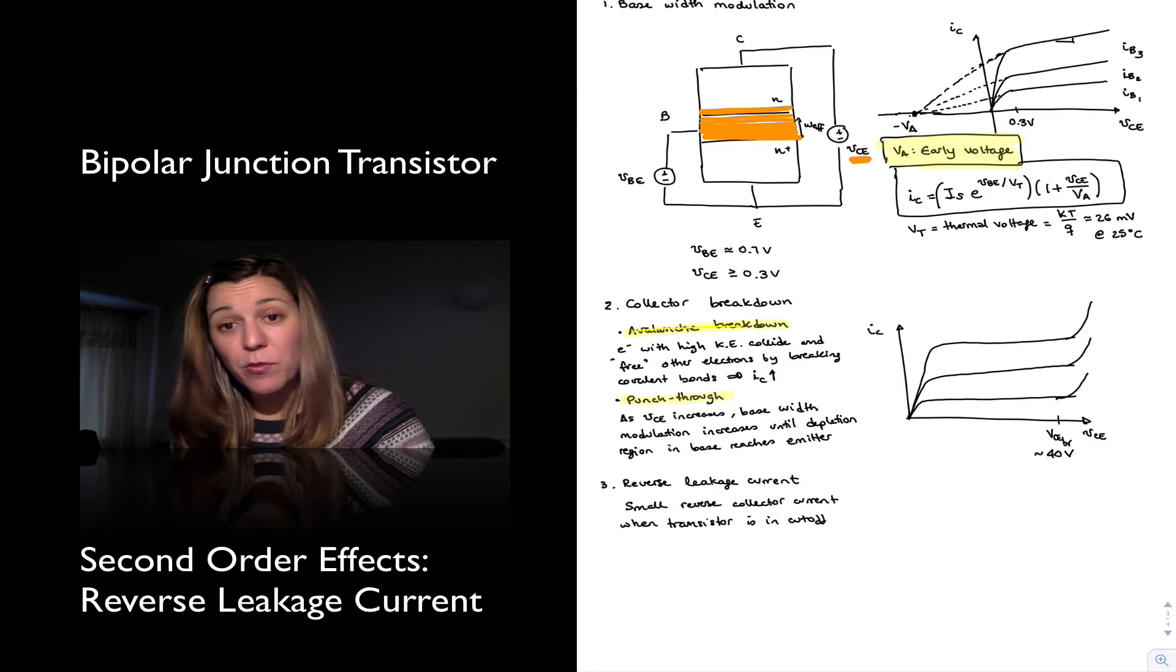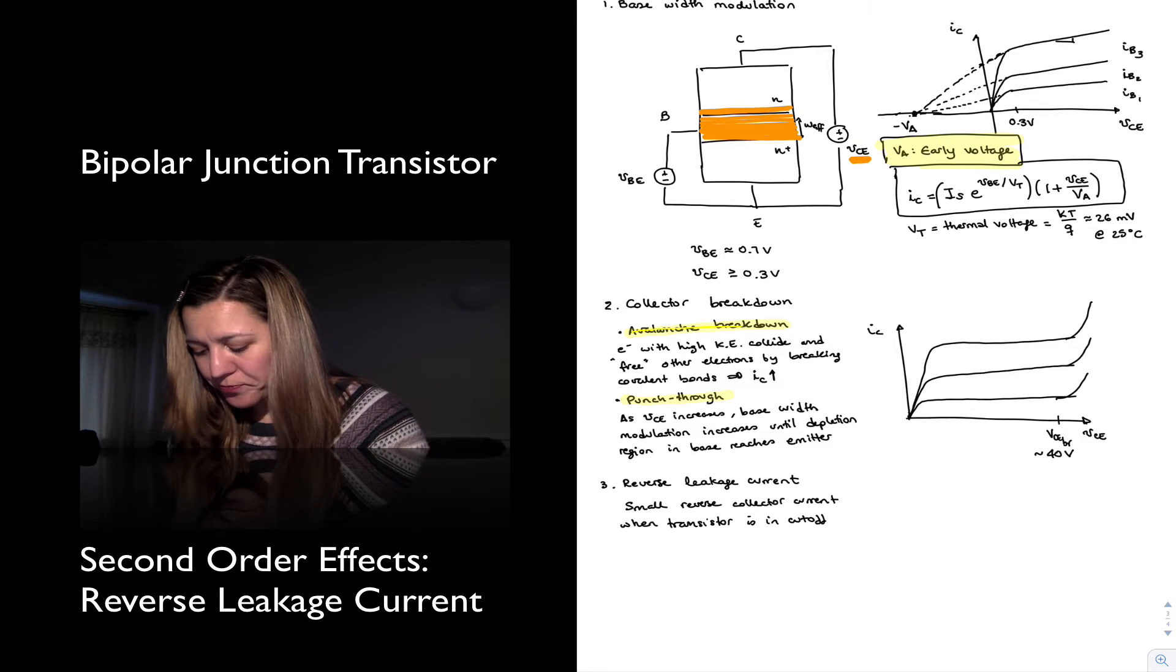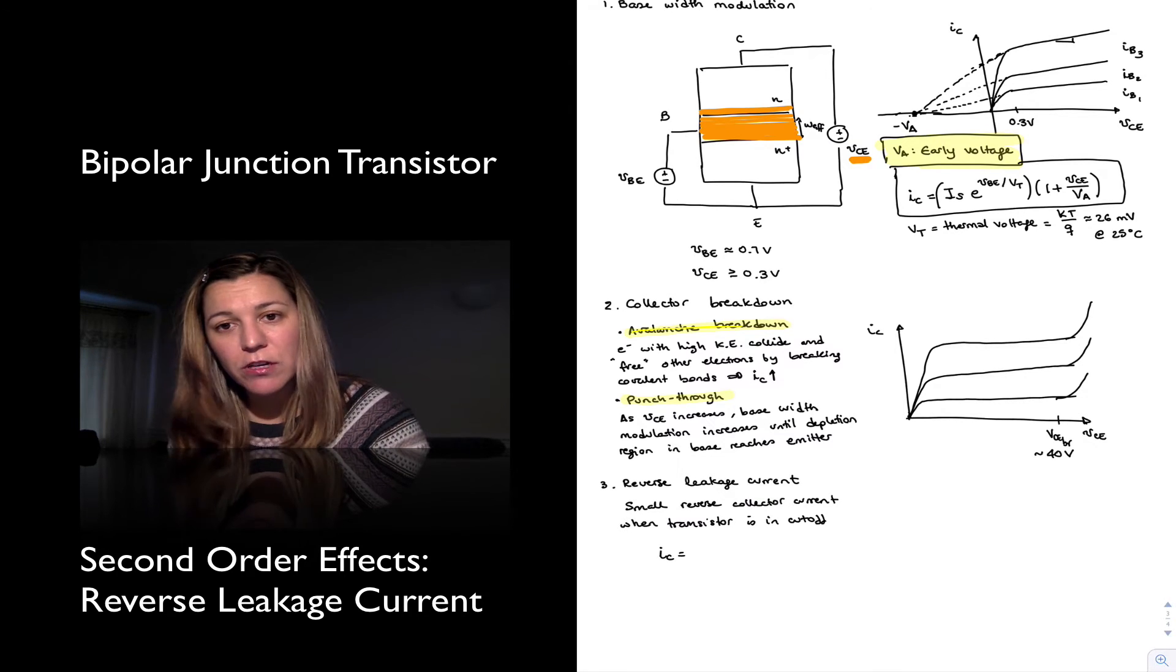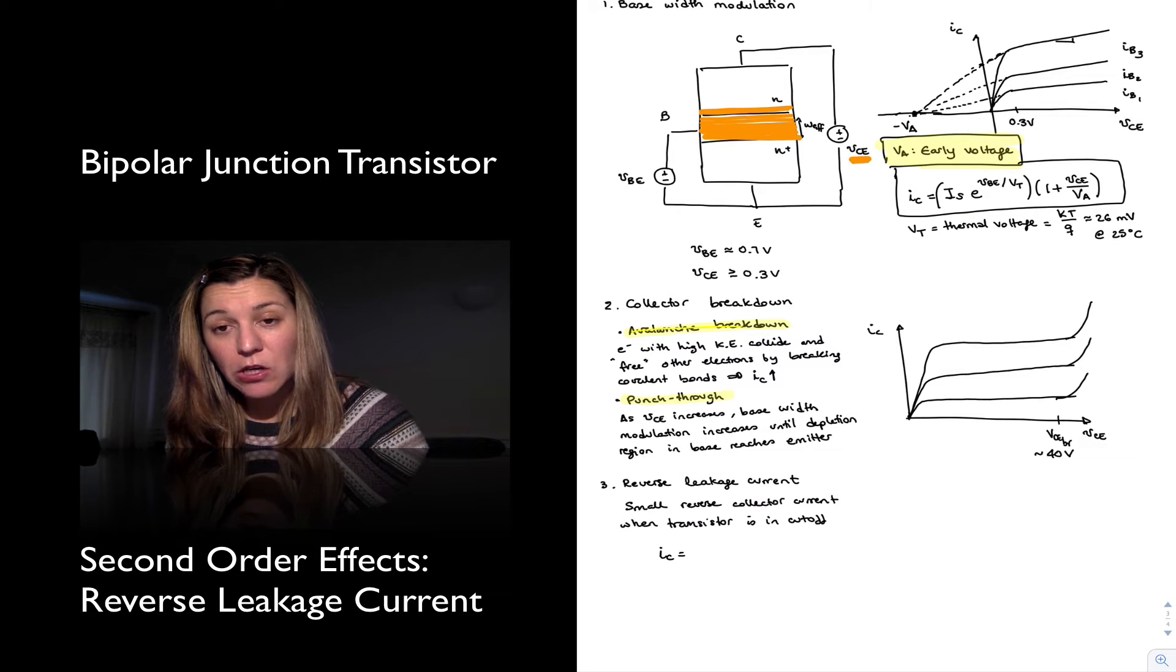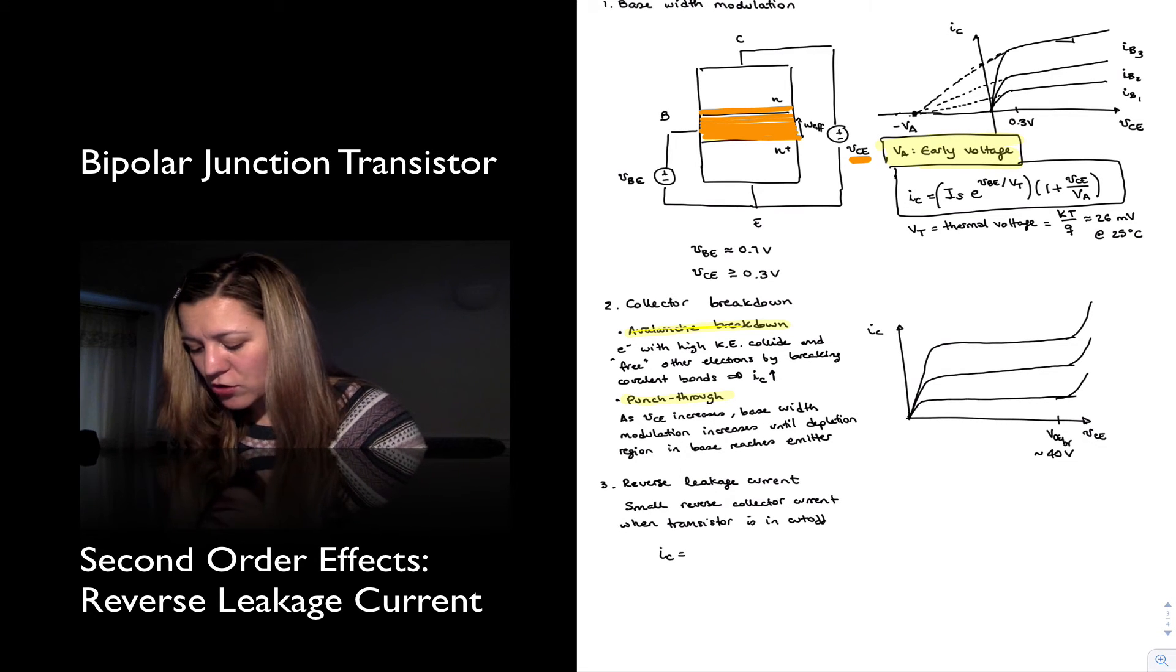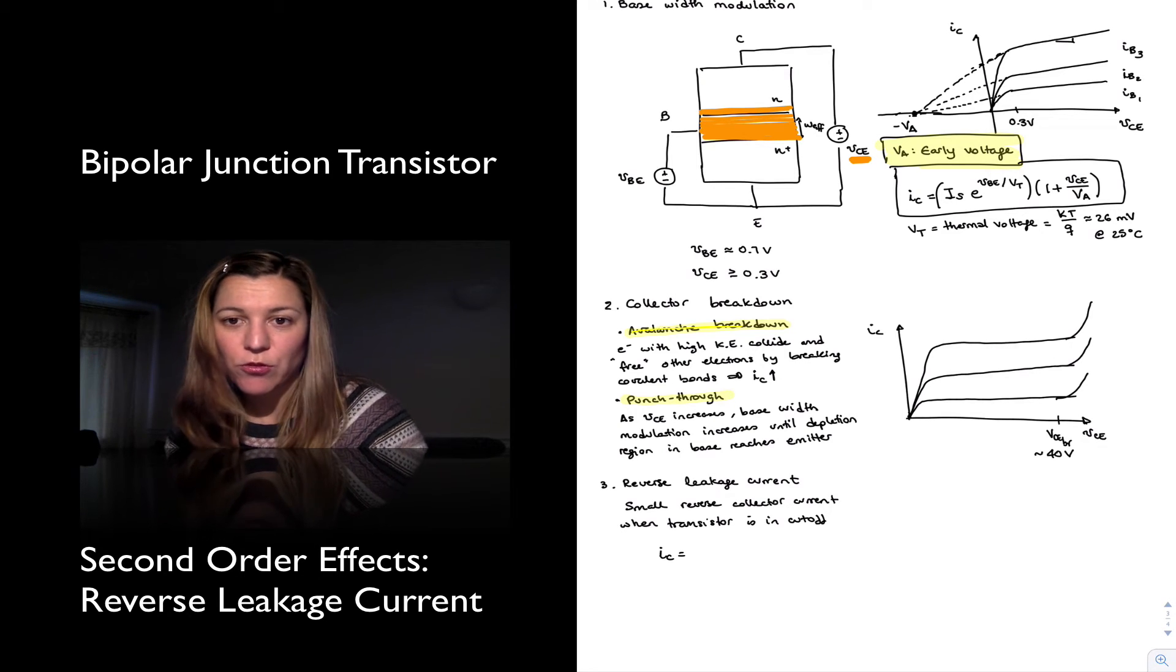And if we remember from the diode equation, we have an exponential relationship between the current through the diode, or through the P-N junction, and the voltage across. And so we could write that the current through the emitter,